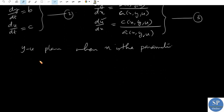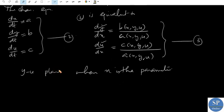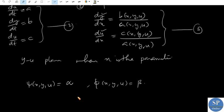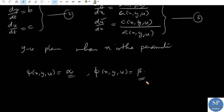Lagrange assumed that the two-parameter set of solutions of the characteristic curves can be represented by the intersection of two families of integral surfaces: ψ(x, y, u) = α and φ(x, y, u) = β. That is, the two-parameter family of solution curves of the characteristic equations (2) can be represented as the intersection of these two integral surfaces.